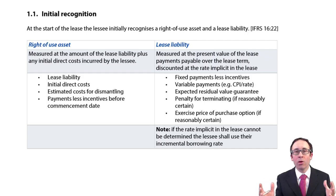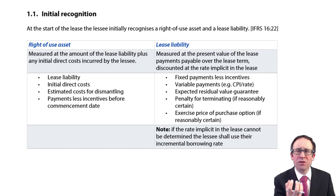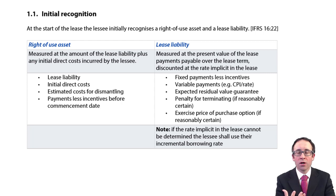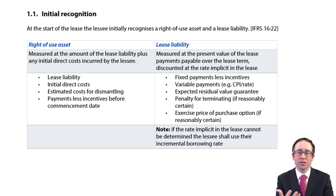Having gone through and looked at the exemptions available for low-value assets, or assets that are going to be used for a lease of less than 12 months, we're going to now move on to the meat of the standard. Remember, under IFRS 16, all leases, apart from those exceptions already mentioned, are now brought on to the financial statement. They are recognised within the statement of financial position. There is no longer any off-balance sheet finance.